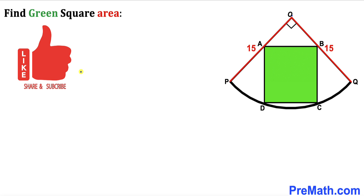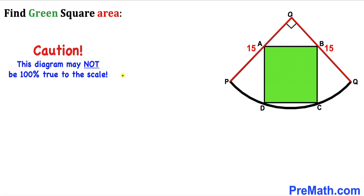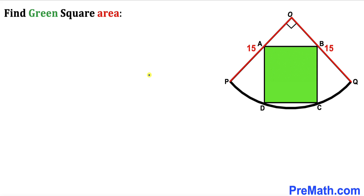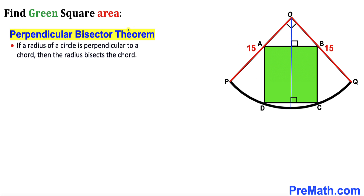Please don't forget to give a thumbs up and subscribe. Keep in mind that this figure may not be 100% true to the scale. For our very first step, we can see that CD is a chord on this quarter circle. I have dropped a perpendicular from center O onto chord CD.